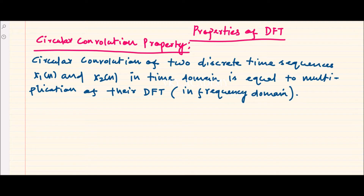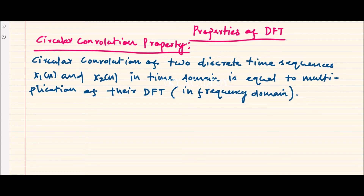We discussed the convolution property of Z-transform in the Z-transform session, where convolution of two discrete time sequences in the time domain is always equal to multiplication in the frequency domain. That means if the two sequences are x1(n) and x2(n) with Z-transforms X1(z) and X2(z), then convolution of x1(n) and x2(n) in time domain equals X1(z) multiplied by X2(z).